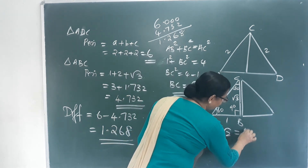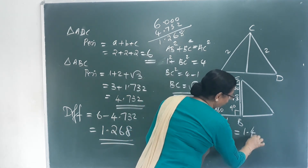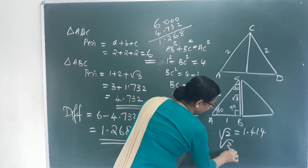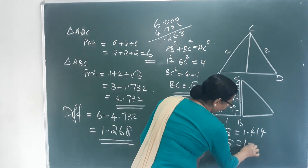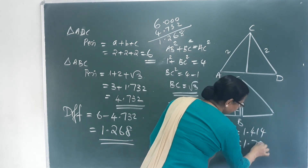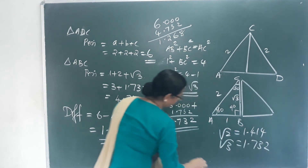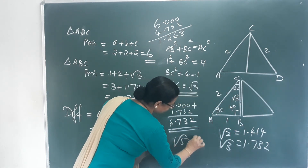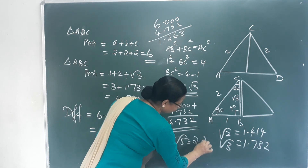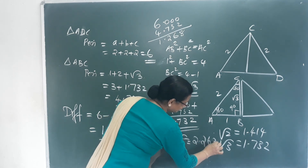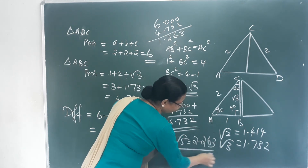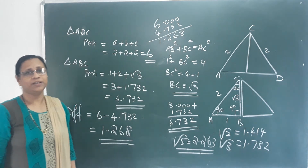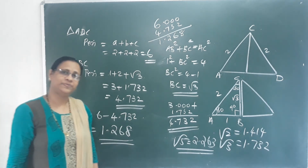The value of root 2 is 1.414. The value of root 3 is 1.732. The value of root 5 is 2.263. We will find these three values. Okay, thank you.